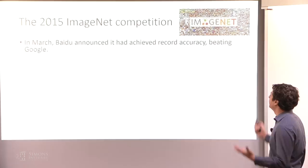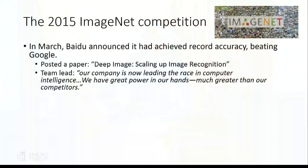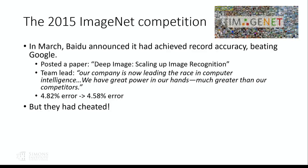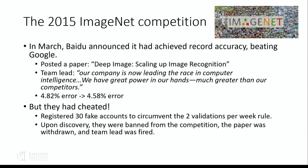You could check the performance of your model on this validation set, but they were a little bit concerned this wasn't safe. So they added a limitation that you could only check your performance twice per week. In the 2015 iteration, there was an exciting announcement in March by Baidu. They announced that they'd achieved record accuracy, beating Google. They posted a paper. The team lead said they were now leading the race in computer intelligence. But it quickly came out that they had cheated.